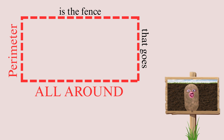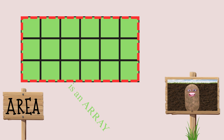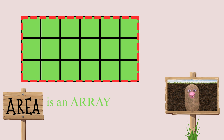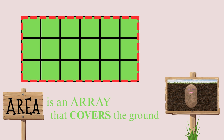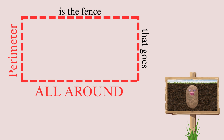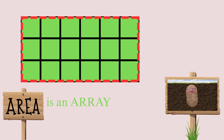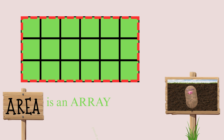Perimeter is a fence that goes all around. Area is an array that covers the ground. Perimeter is a fence that goes all around. Area is an array that covers the ground.